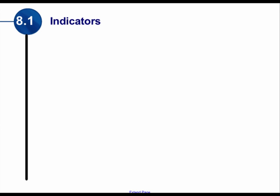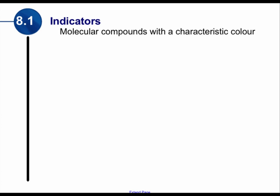There is another category of molecular compounds that are considered indicators. And an indicator is a molecular compound that has a certain characteristic color, something unique to it.